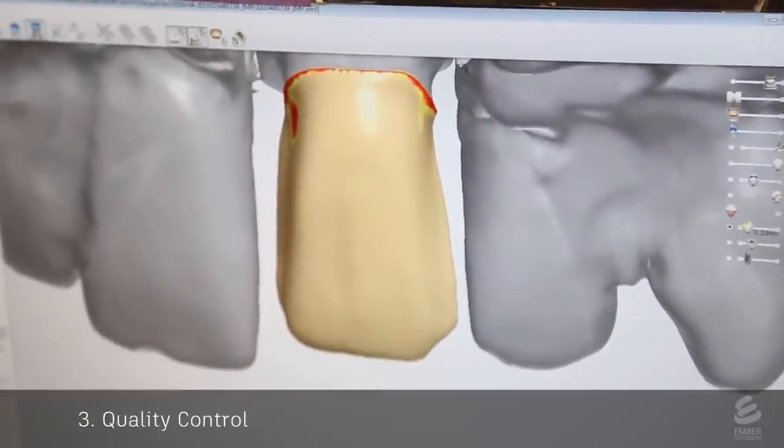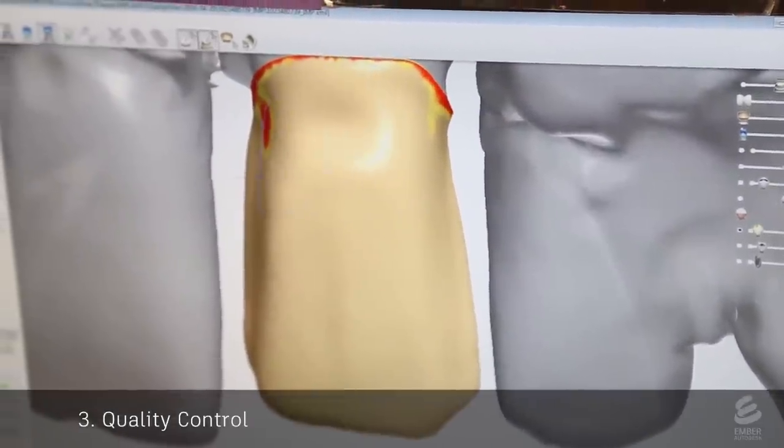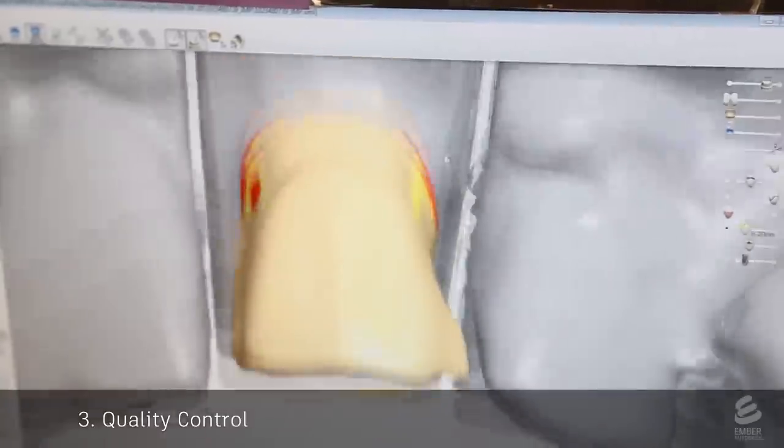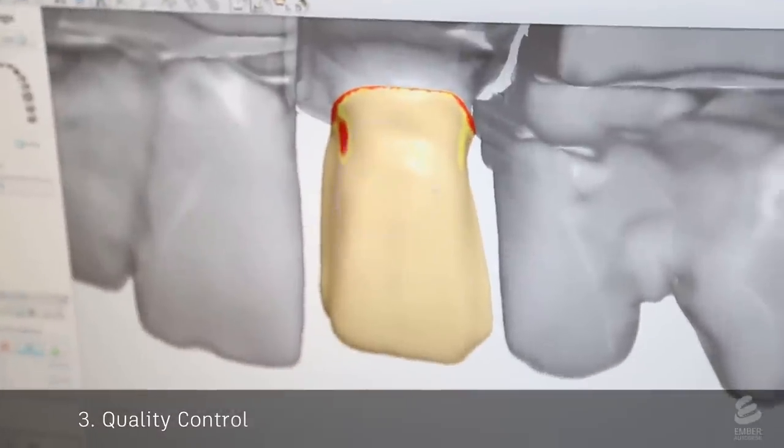This digital mesh is sent to a second technician who performs quality control. This is similar to the previous step, but this technician is more experienced and makes sure that the shape of the tooth looks natural.